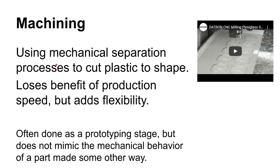Machining plastics is not uncommon, especially for small production runs. It lets you make plastic parts without investing in hard tooling, which most other processes require. Machining is good for one or two parts up to maybe a few hundred, but not thousands. It's sometimes used as a prototyping stage, though it's important to realize that a machined part will have different mechanical characteristics than a part that was injection molded, compression molded, or rotationally molded — so it works as a functional mock-up but not to test true strength.